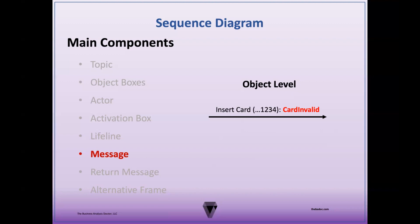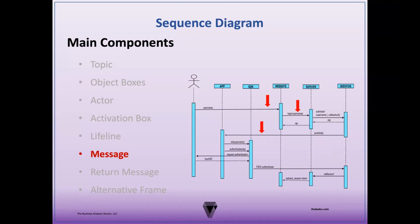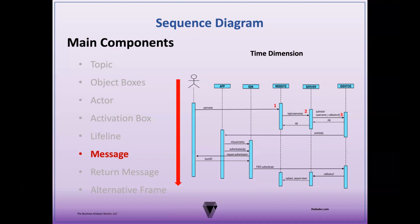Now let's look more at how messages operate. Messages flow from the activation box of the sending object toward the activation box of the receiving object. The order of messages is represented by moving further down the lifeline vertically with each message — the first message is shown at the top and the last at the bottom. Both the ordering of objects and the sequence of messages are illustrated vertically along the time dimension, which illustrates order, not duration. Another optional notation is to number the messages according to the sequence in which they occur.